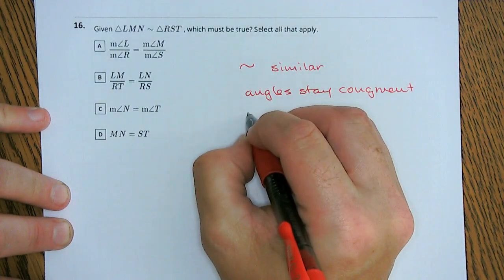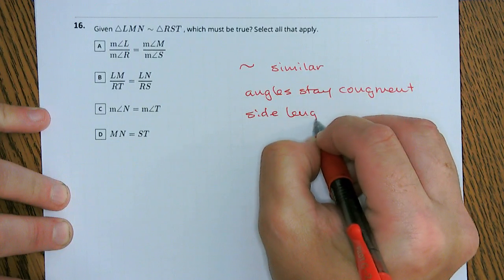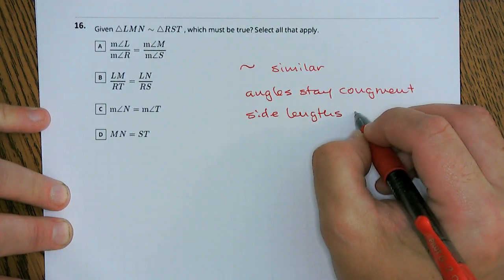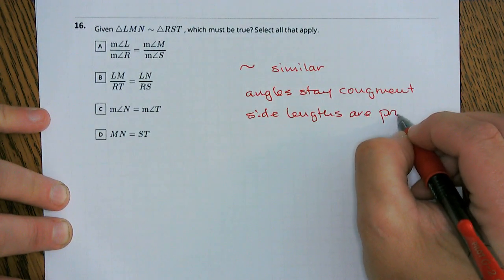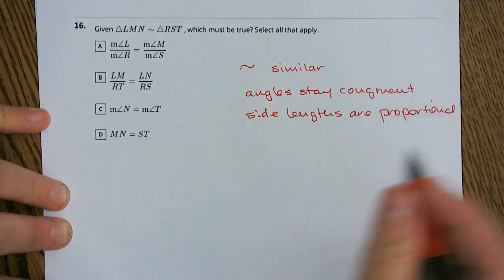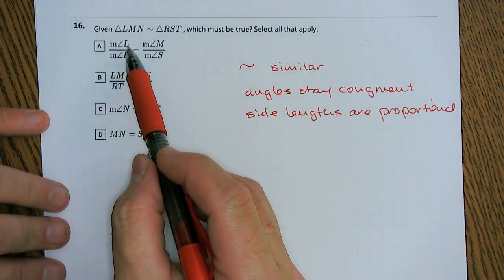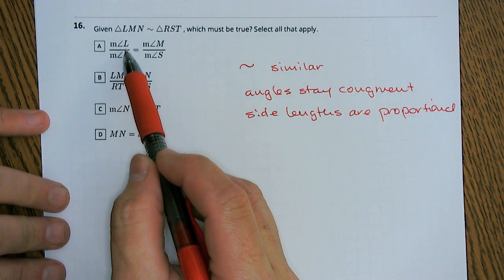But our side lengths are proportional, not congruent. So let's see.